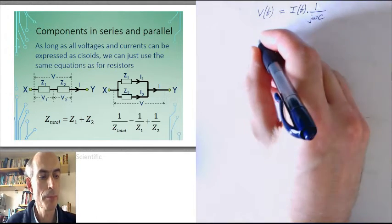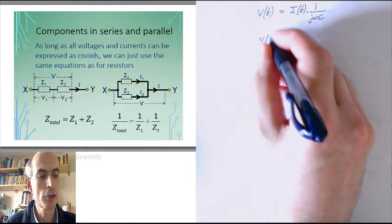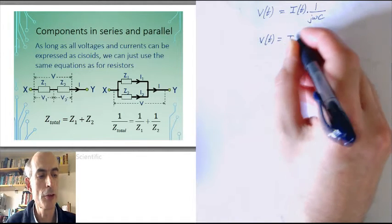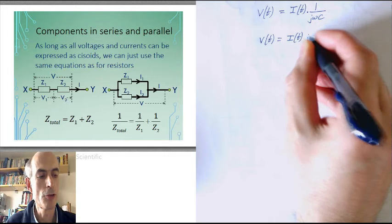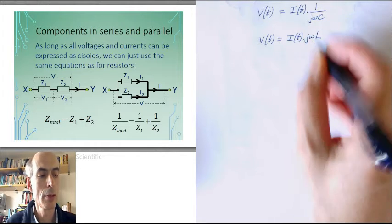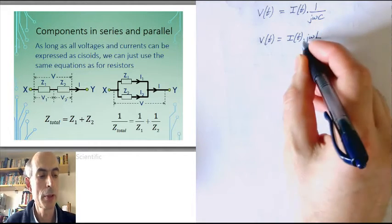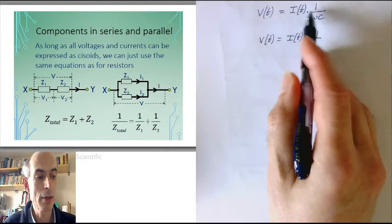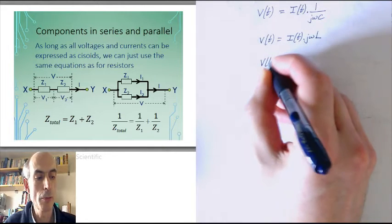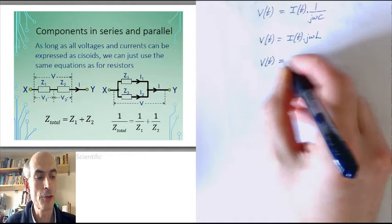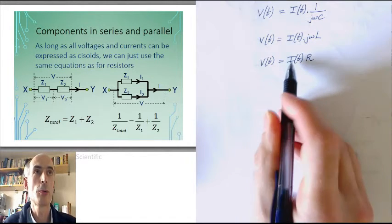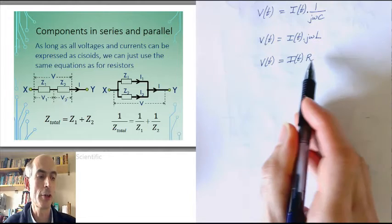And for an inductor, the voltage across an inductor is the current through the inductor times jωL, where jωL is the complex impedance of the inductor. These are analogous to Ohm's law, which says that for resistors the voltage is equal to the current times the resistance.